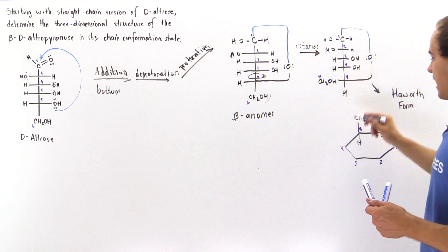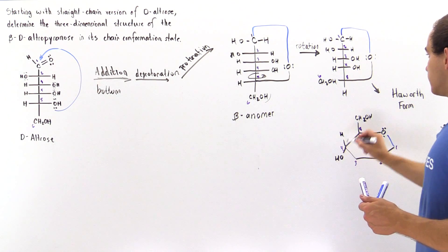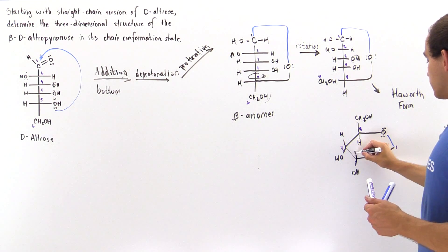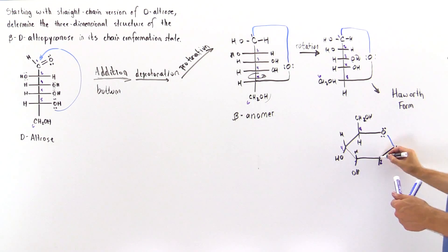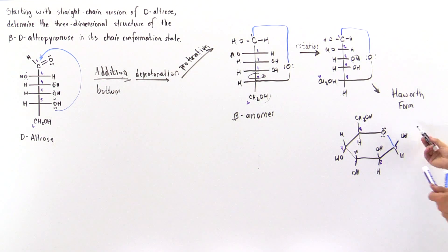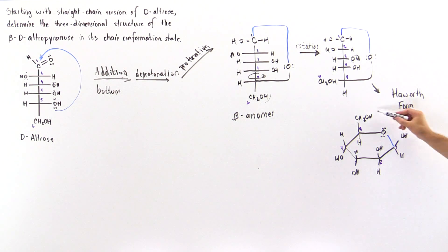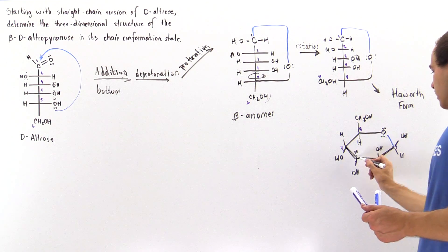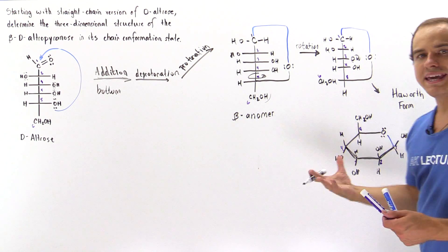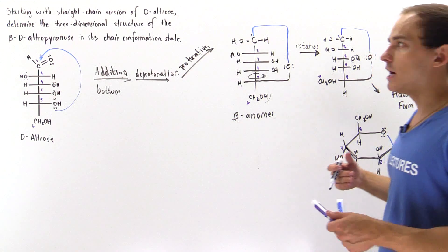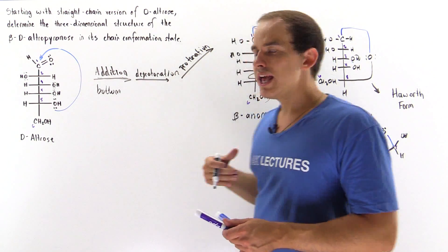For carbon four: H goes to the top, OH goes to the bottom. Carbon three: OH goes to the bottom, H goes to the top. Carbon two: OH goes to the top, H goes to the bottom. Carbon one: OH goes to the top, H goes to the bottom. This is the beta anomer because the OH points in the same direction as the primary alcohol group. However, this describes the ring as planar, but the ring is actually in the chair conformation, and there are two chair conformations.